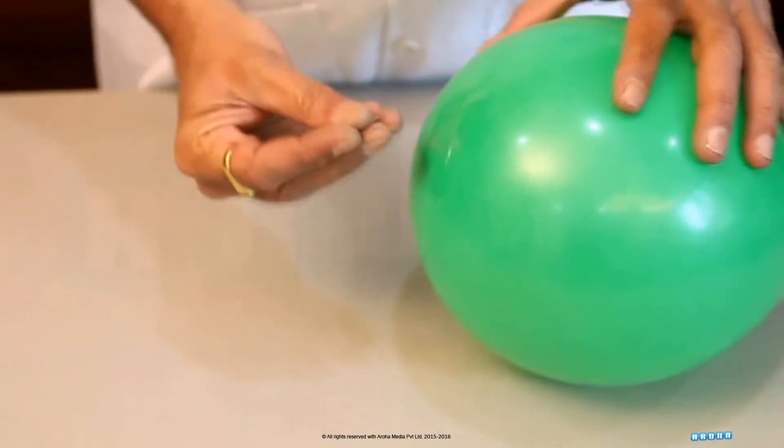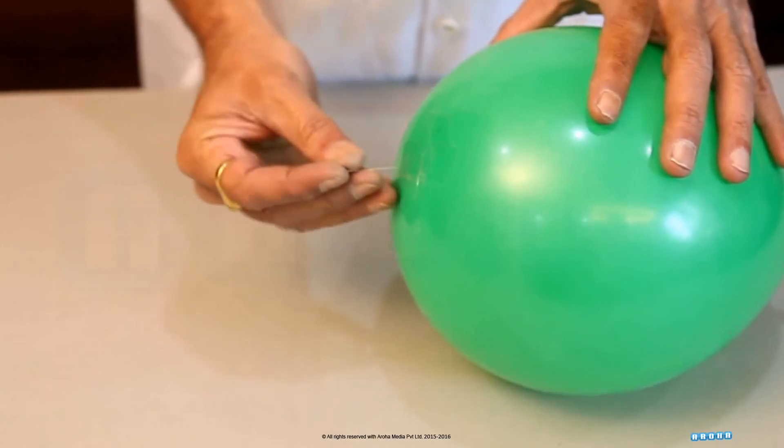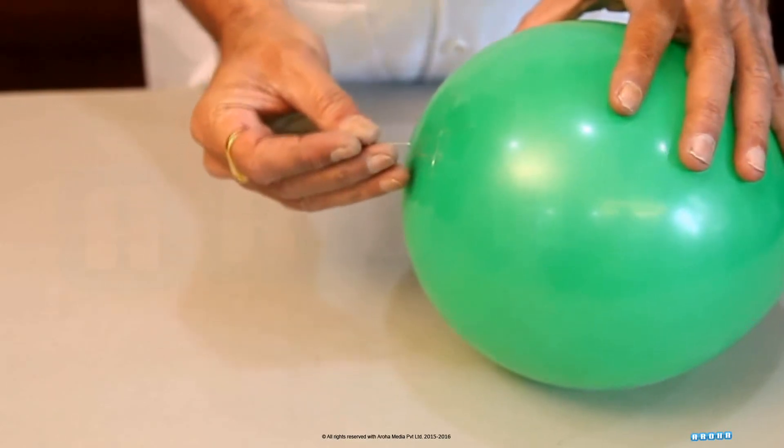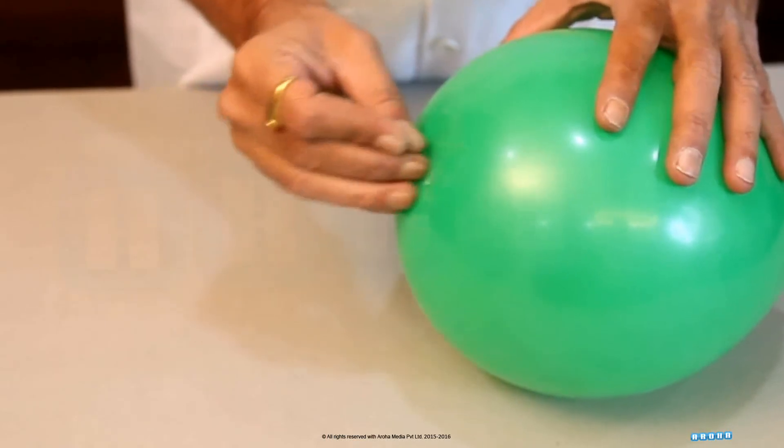Pierce the area with a pin where the sticky tapes overlap each other. This will be the thickest part of the balloon. You'll be surprised to see that the balloon does not burst.